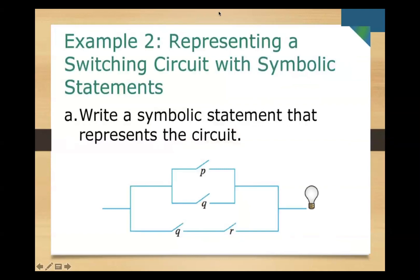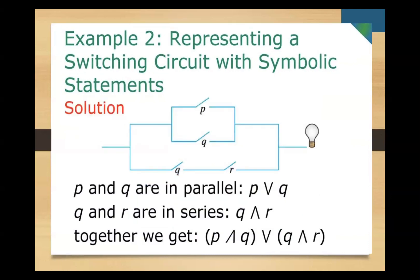Example: representing a switching circuit with a symbolic statement. Write a symbolic statement that represents the circuit. We have p and q in parallel, and then q and r in series before the light. Since p and q are in parallel, that gives p OR q. Since q and r are in series, that gives q AND r. Together: (p OR q) OR (q AND r).